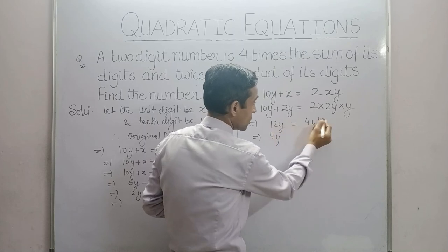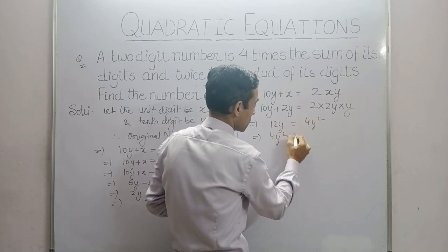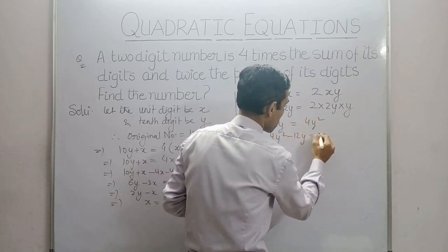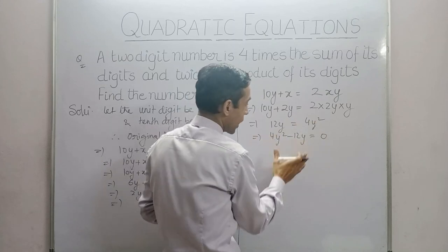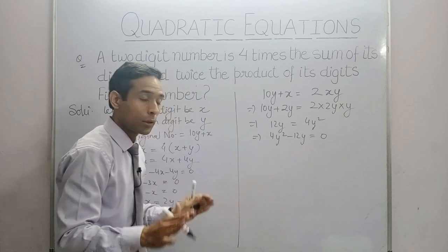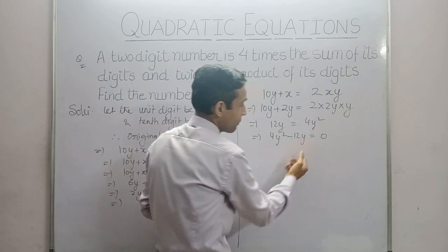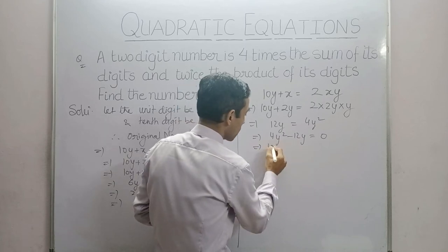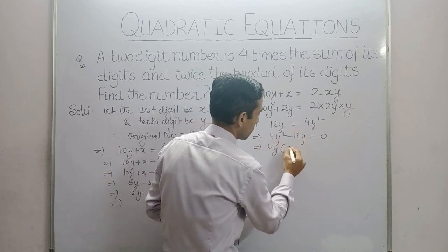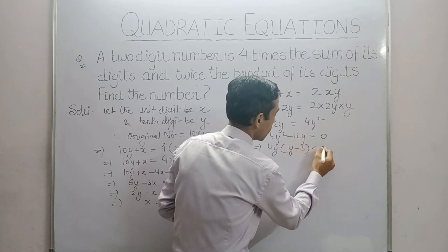This will give 12y = 4y². Here we will not do cancellation because this is a quadratic equation with power 2. We will rearrange it: 4y² - 12y = 0. One term is missing, and that is the constant term. Using factorization method, taking 4y common out: 4y(y - 3) = 0.